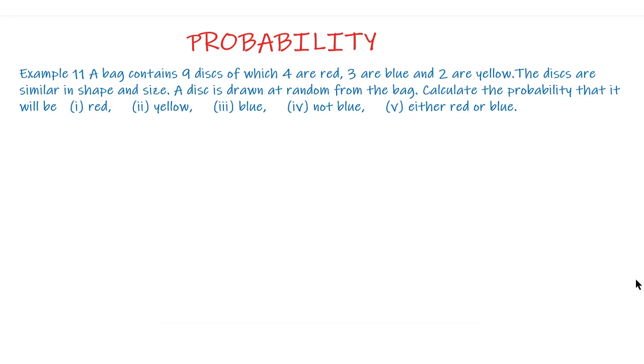So we solve like this. Part 1, probability of red: as there are 4 disks that are red and total disks are 9, therefore the probability of red is 4 upon 9. The favorable point in sample space is 4 as there are 4 disks and there are total disks are 9. So probability of getting red disk is 4 upon 9.